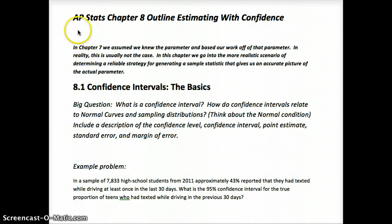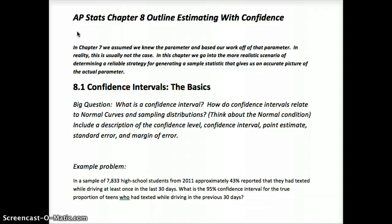In Chapter 7, we assumed we knew the parameter and based our work off of that, basically to see the relationship between a population distribution and a sampling distribution. However, that is not the case in reality. We did that just to get an understanding of the relationship and how everything works in terms of estimating a true parameter. In reality, we don't know the parameter, and that's our whole goal — to take a small unbiased sample and determine a parameter.